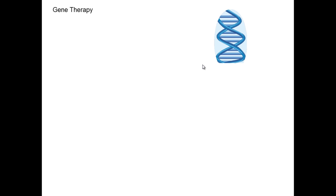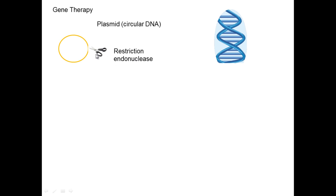In order to undergo gene therapy, what you first need to do is find a way of extracting a healthy allele or healthy gene. One of the first things used is a specific type of enzyme called a restriction endonuclease, represented here by scissors as they act a bit like scissors.